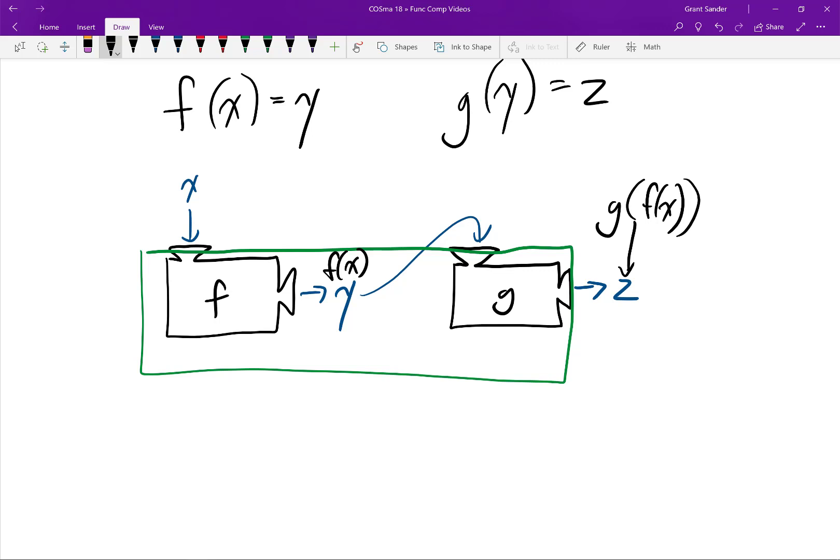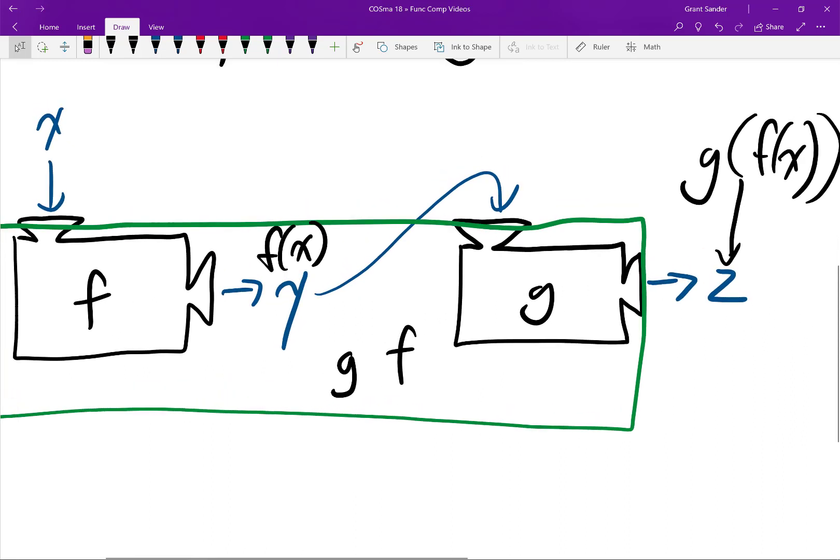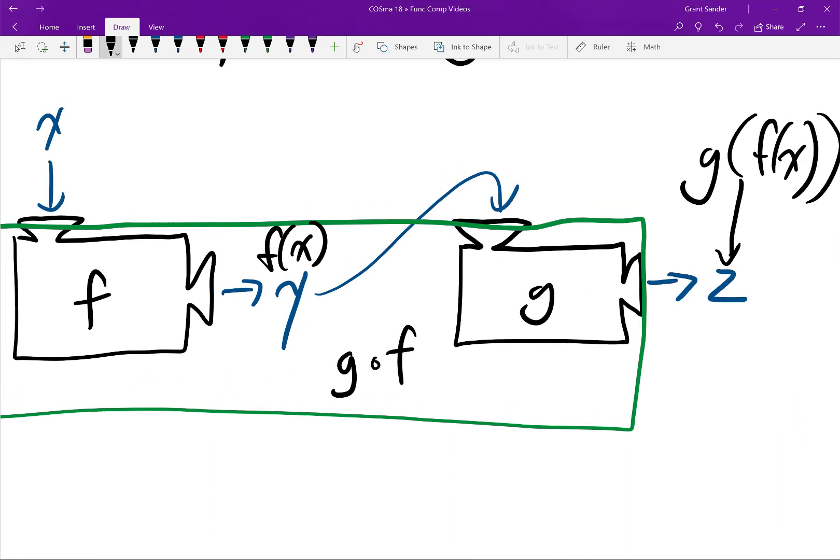We usually say g of f of x to represent this output. If we want to name this function like an f or a g, in mathematics we usually write this as g of f. So this is supposed to be like a little floating circle in between there. So g of f is the name of this green function.